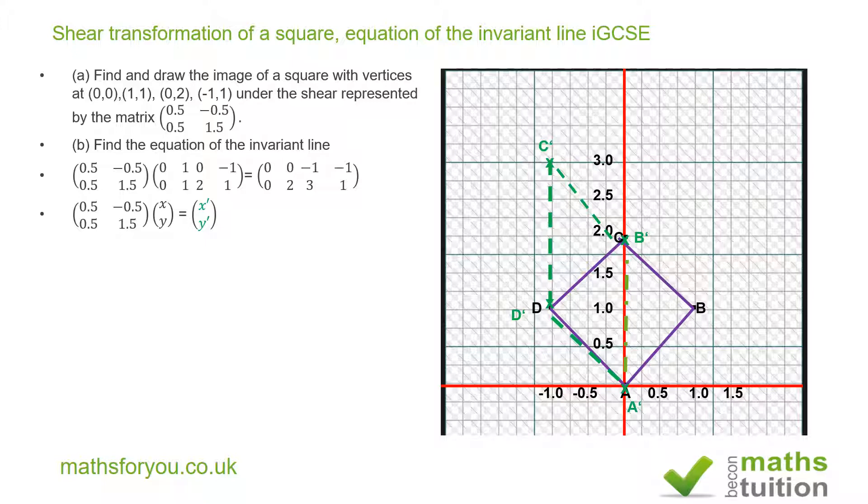we get for x' this: 0.5 times x plus -0.5 times y. Call this equation 1. Next I do 0.5 times x plus 1.5 times y, and that will give me y'.